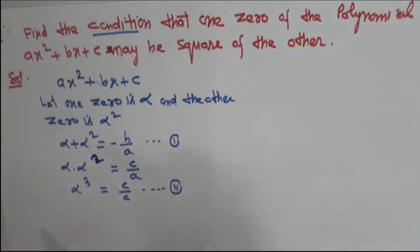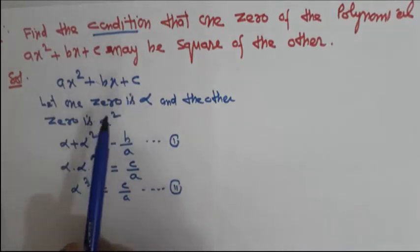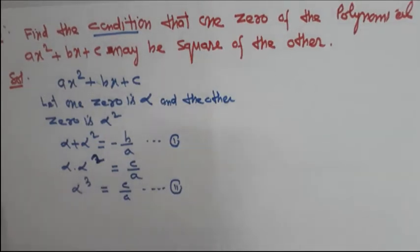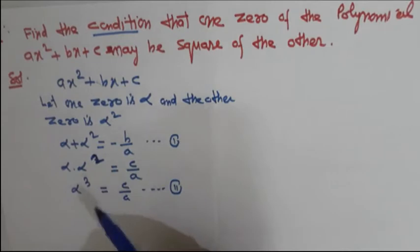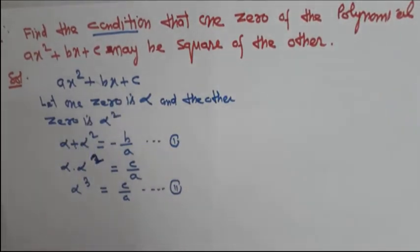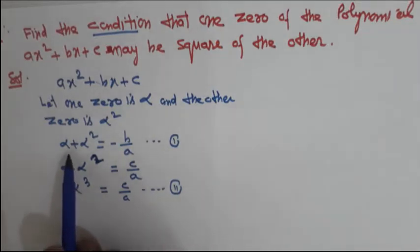Whenever you have to find out the condition in any polynomial question, it means you have to find a relation between A, B, and C in one single equation. So here we have equation 1: alpha + alpha² = -b/a, and equation 2: alpha³ = c/a. The important step is cubing equation 1, because we can use the value of alpha³ from equation 2.